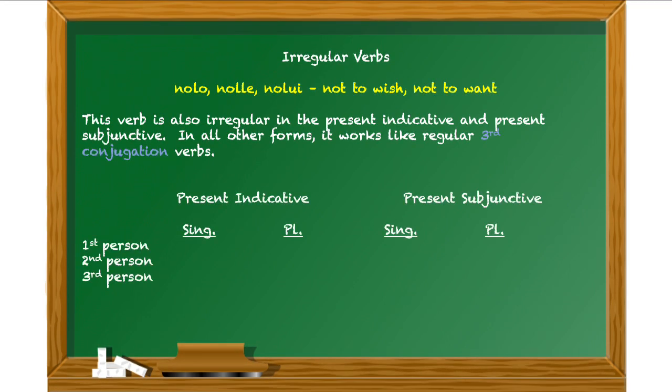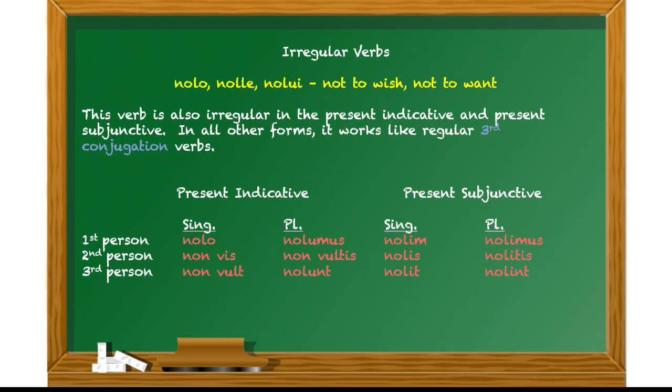So again, you want to set up your chart. And then we'll see the Latin forms. And here in the indicative, you can really see it's irregular. You've got a combination of forms that are just one word and forms that are two words. So nolo in the first singular, one word. But then second singular, non vis. Then non vult. And that's clearly just the negative of the forms of volo. Then on the plural side, nolumus. Back to two words, non vultis, and then nolunt.